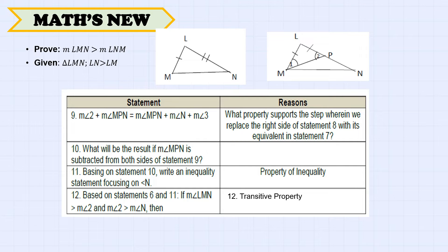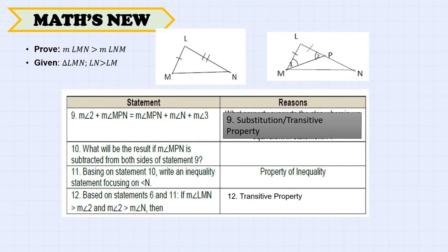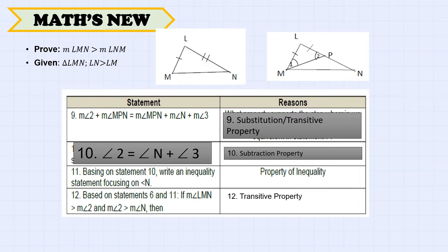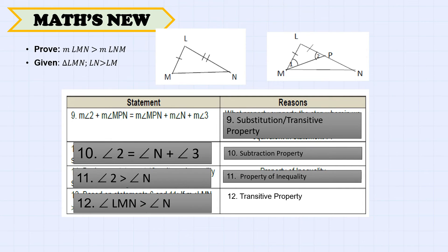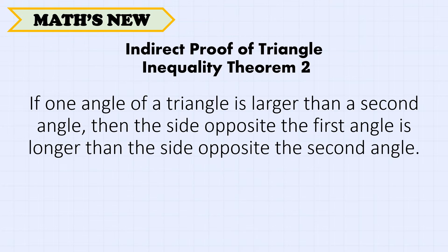By the substitution or transitive property, we replace the right side of statement 8 with its equivalent from statement 7, giving us angle 2 equals angle N plus angle 3. By the subtraction property, we subtract angle MPN from both sides. Therefore, angle 2 is greater than angle N by the property of inequality, and by the transitive property, angle LMN is greater than angle N. This proves Triangle Inequality Theorem 1.